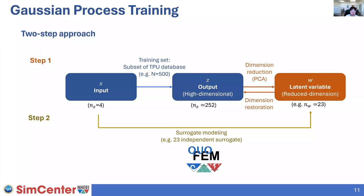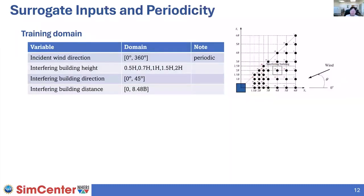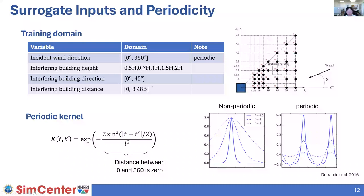We used quoFEM to train the surrogate model. We have four input variables across the domain of interest. One small detail is that wind direction is in fact a periodic variable — the response near zero degrees will be similar to the response near 360 degrees — so we introduced a periodic kernel that accounts for such periodicity. To do this we made a small modification in the quoFEM backend, but everything is written in Python script, which should be straightforward for anyone using quoFEM.